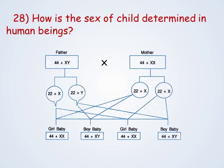How is the sex of a child determined in human beings? Out of 23 pairs of human chromosomes, the 23rd pair is sex chromosomes. Women have a perfect pair of sex chromosomes XX, whereas men have a mismatched pair X and Y. If the X of the father fuses with the X of the mother, then it is a girl baby. If the Y of the father fuses with the X of the mother, then it is a boy baby.